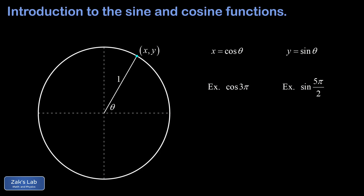We'll finish this section by looking at a couple of examples with angles larger than 2π. For the cosine of 3π, we go around the circle once to reach 2π, then go an extra π, ending at the point (−1, 0). So cosine of 3π is just −1. For the sine of 5π/2, four π over two is 2π — one full rotation — and then we go π/2 past that, landing at the point (0, 1). So the sine of 5π/2 is positive one.